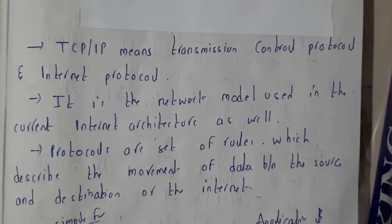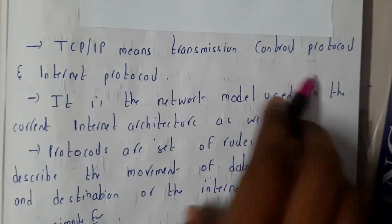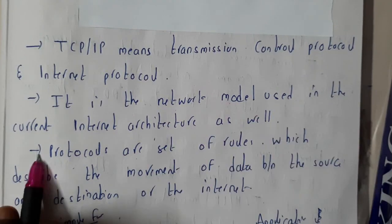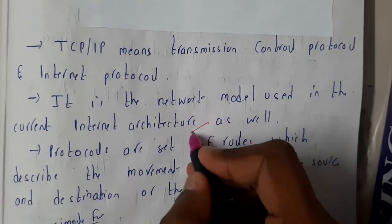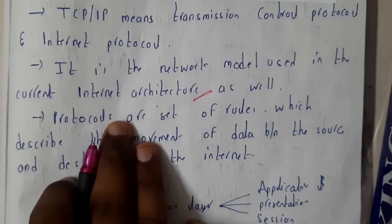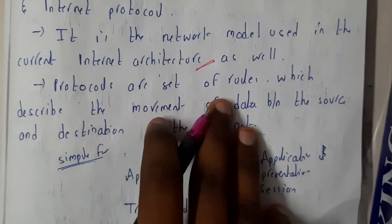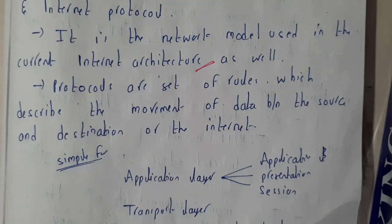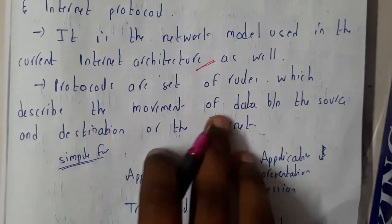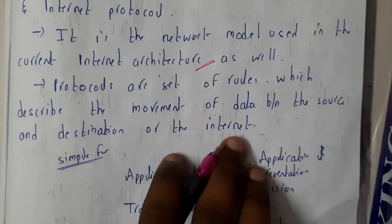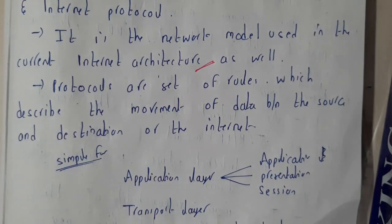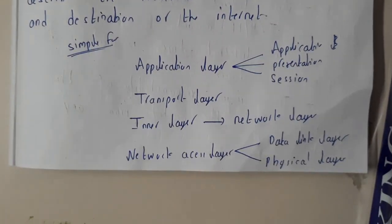TCP/IP stands for Transmission Control Protocol and Internet Protocol. It is the network model used in the current internet architecture. Protocols are nothing but a set of rules which describe the movement of data between the source and destination over the internet.